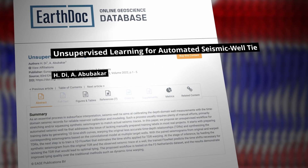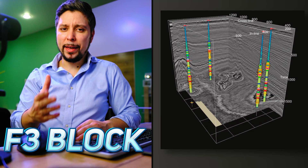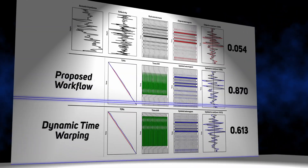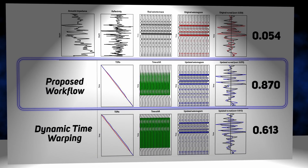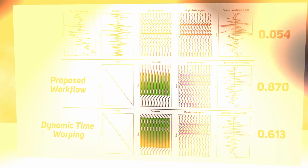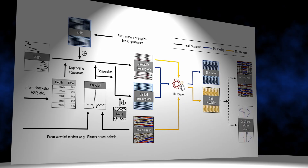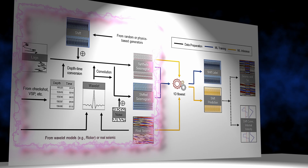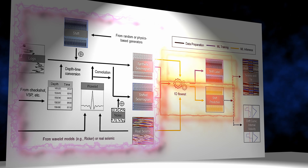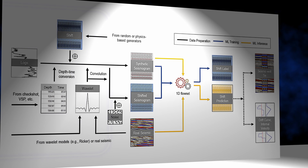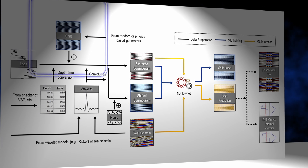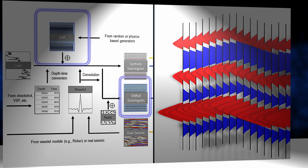We can see the result of this method on the F3 dataset. Compared to analytical alignment, the method produced a 60% correlation coefficient while the proposed method resulted in an 87% match. The overall workflow consists of three components: data preparation, machine learning training, and inference. They use data from well logs, convert them to time using checkshots or VSP, and using a convolutional model they introduce random time shift curves and synthesize tweaked synthetic seismograms.